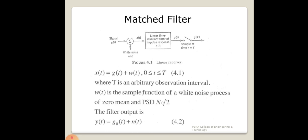The mixed channel signal x(t) passes through a linear time-invariant filter with impulse response h(t), producing output y(t). The detection system samples at time t = T to obtain y(T). Using MATLAB code, we can generate x(t), w(t), and g(t) as zero-mean probability distribution functions.